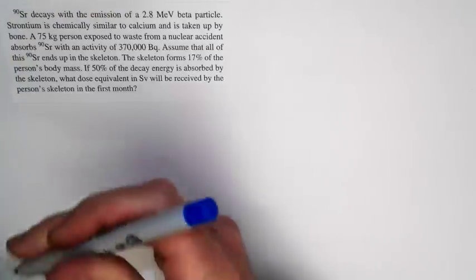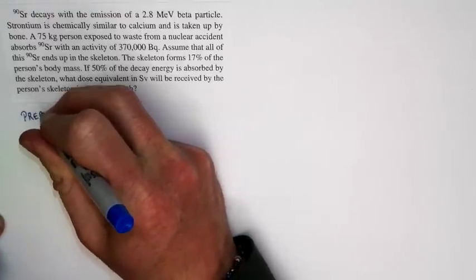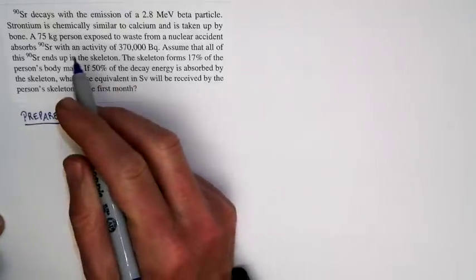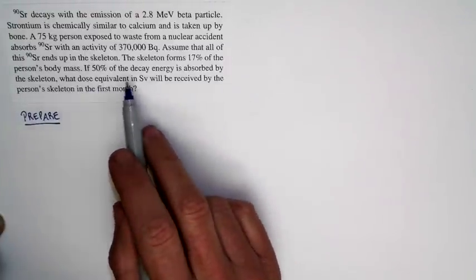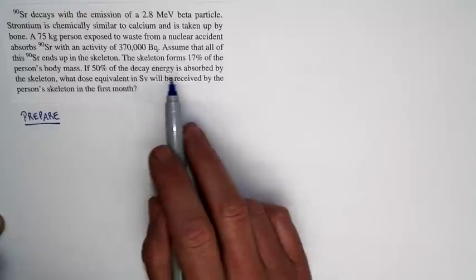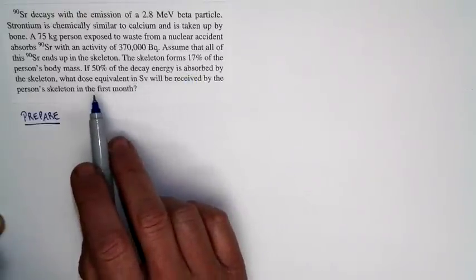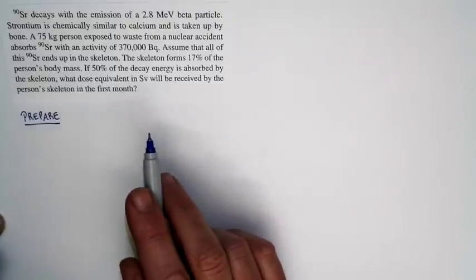Let's go ahead and set this problem up. So what's happened is this: a person has absorbed some strontium-90, and it ends up in the skeleton. 50% of the energy of the decays is absorbed by the skeleton. The skeleton forms 17% of the body mass. The question is, what dose equivalent in sieverts will be received by the person's skeleton in the first month?